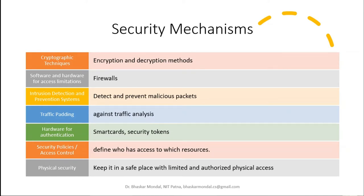Security mechanisms include: first, cryptographic techniques — encryption and encryption methods. Second, security hardware for access limitations, such as firewalls for filtration, and detection and prevention systems to detect and prevent malicious packets. Third, traffic padding against traffic analysis. Fourth, hardware for authentication such as smart cards and security tokens — like tokens used in metro stations and smart cards used at office entry points to open gates.